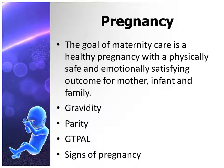Signs of pregnancy fall into three categories. Presumptive signs are noted by the woman and may include amenorrhea, fatigue, nausea and vomiting, breast changes, pigmentation changes, urinary frequency, and quickening. These are considered presumptive because any one of these symptoms can be caused by something other than pregnancy.